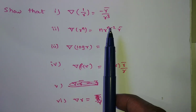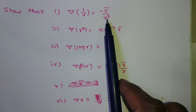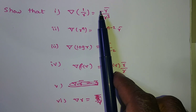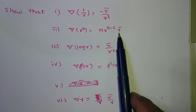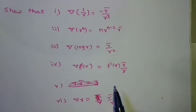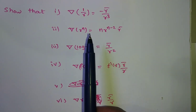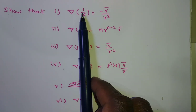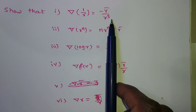What about the resulting vector? The resulting values you are getting are r̄/r³ and -r̄/r³ — so it is a vector. r̄ is there in all of them, so these are all vectors. If you apply del on a scalar point function, the result is a vector.